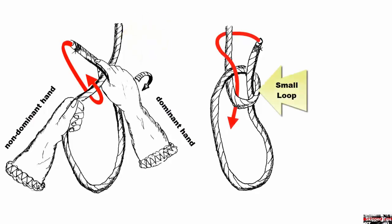With your dominant hand, twist your wrist away from you and at the same time pass the bitter end under the bight to form a small loop. Notice how we do this in the first and second illustration.